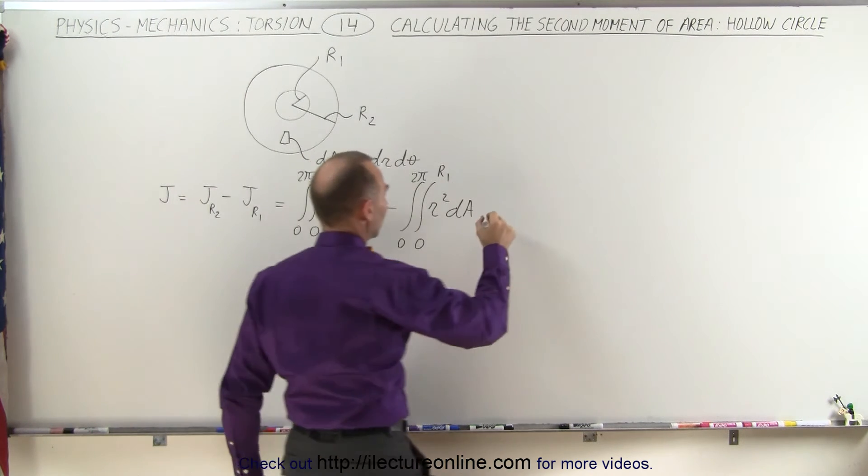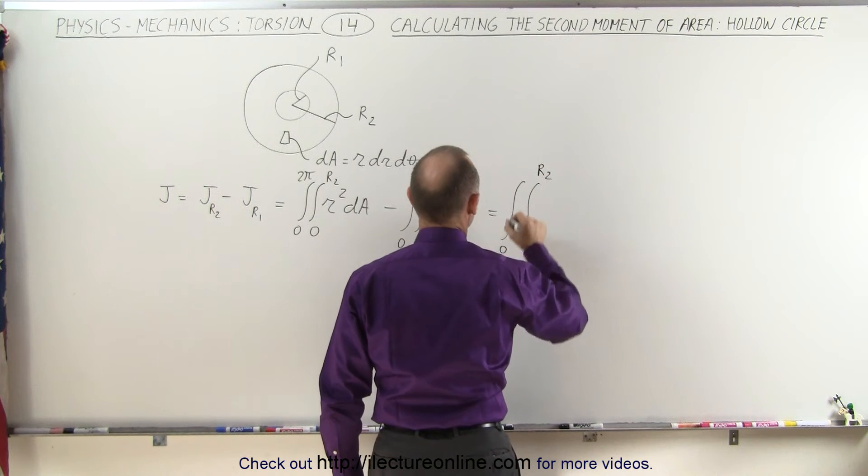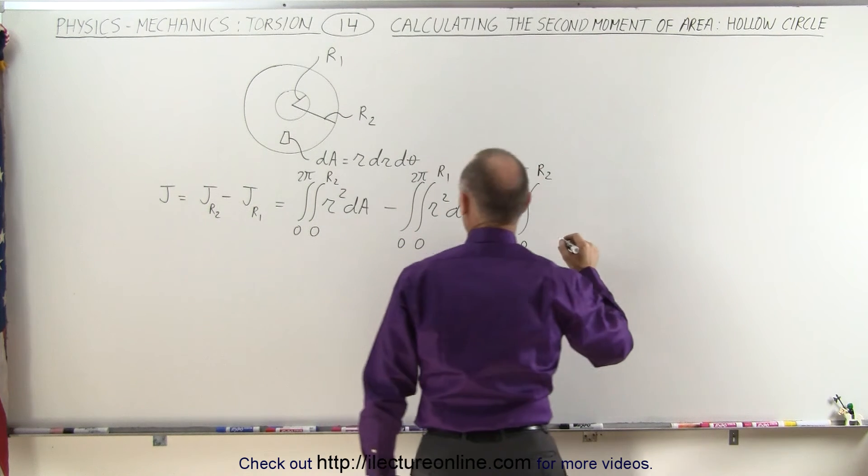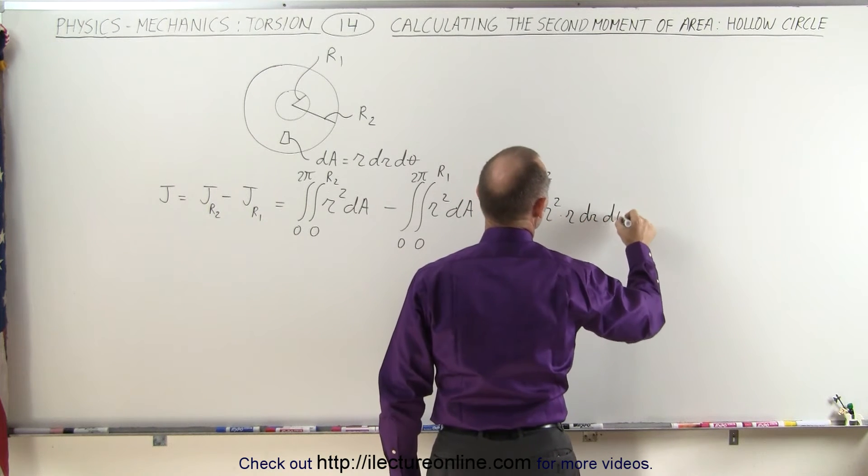So that means that this would be equal to the double integral, from 0 to R2 and from 0 to 2 pi of R squared times R dr d theta,